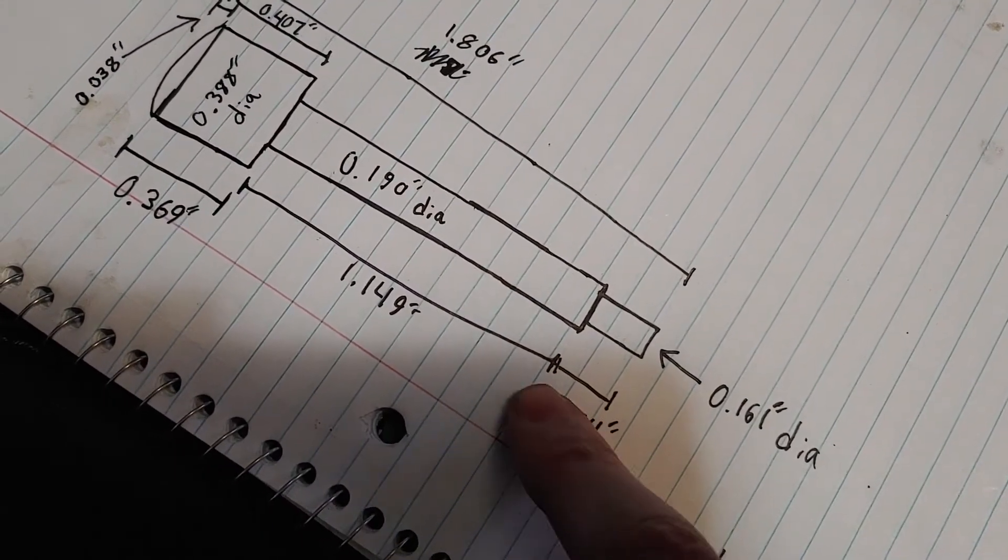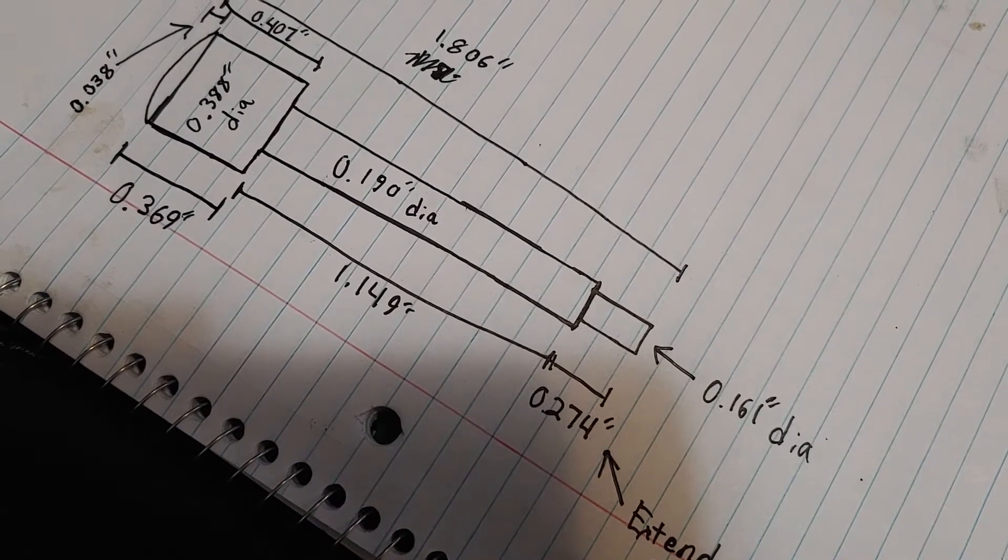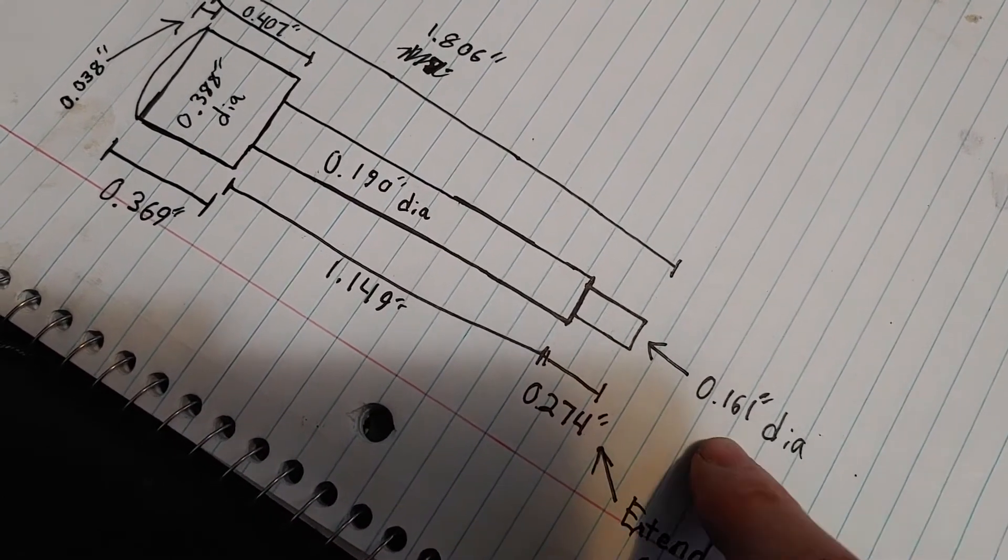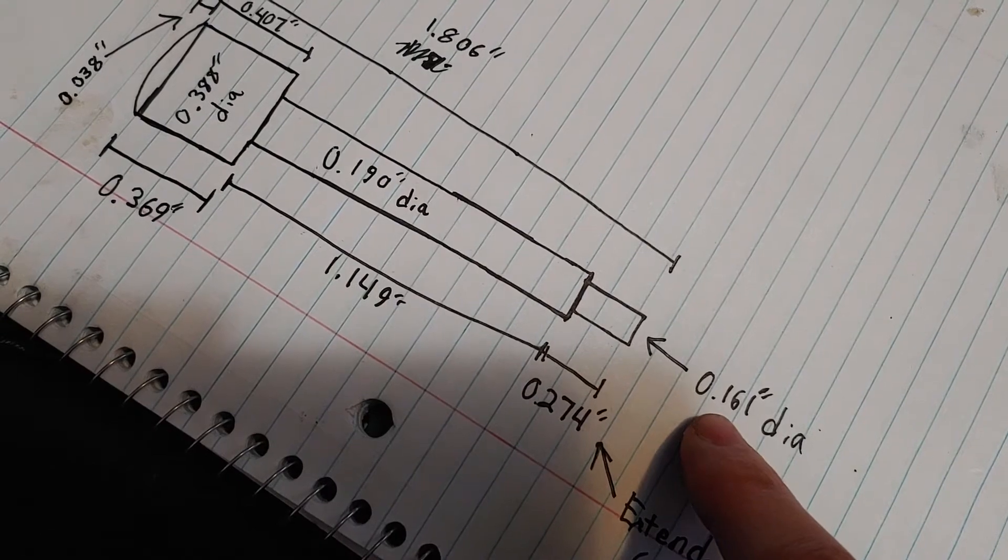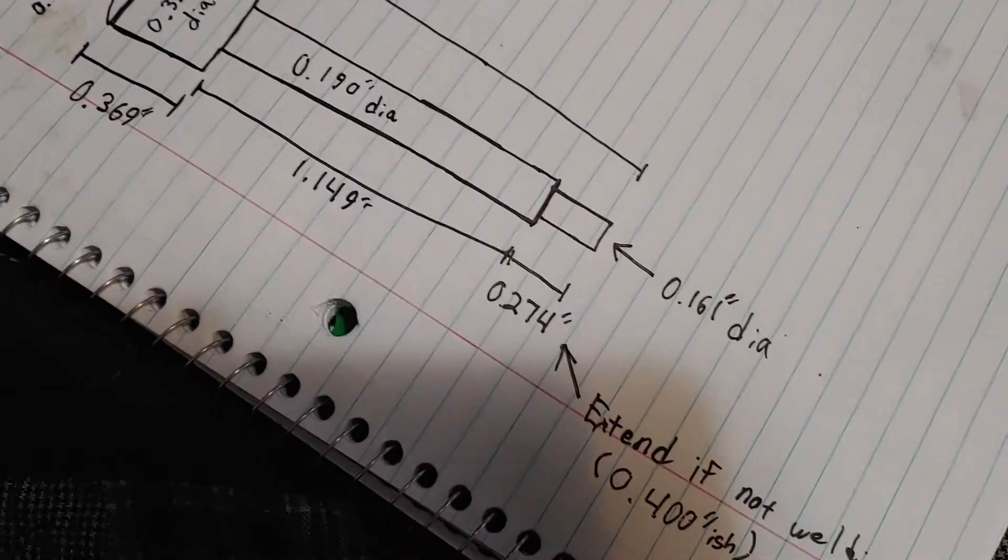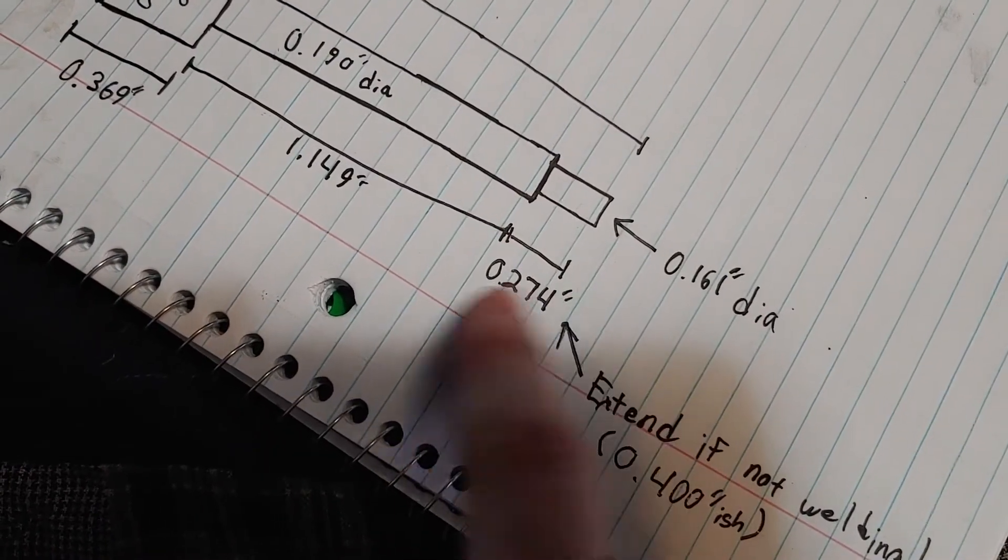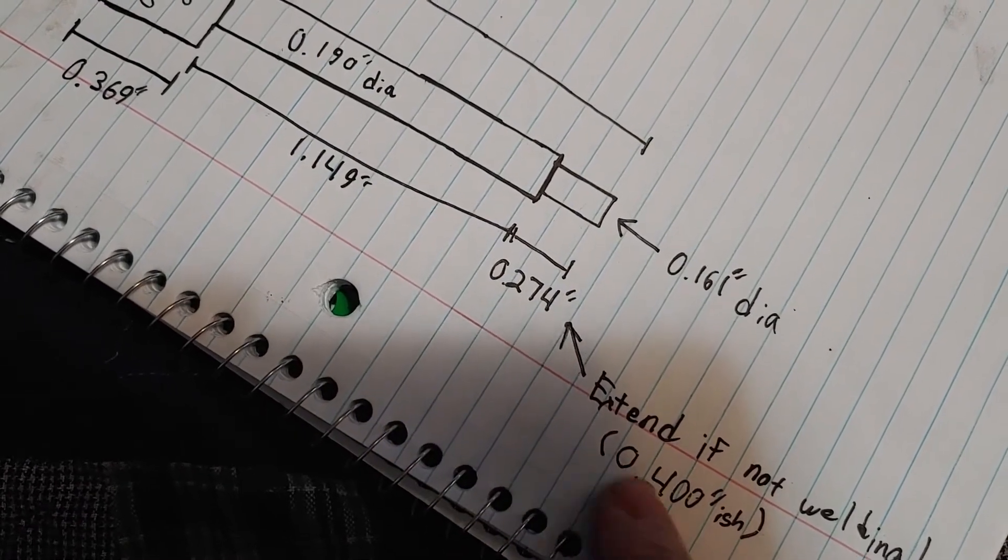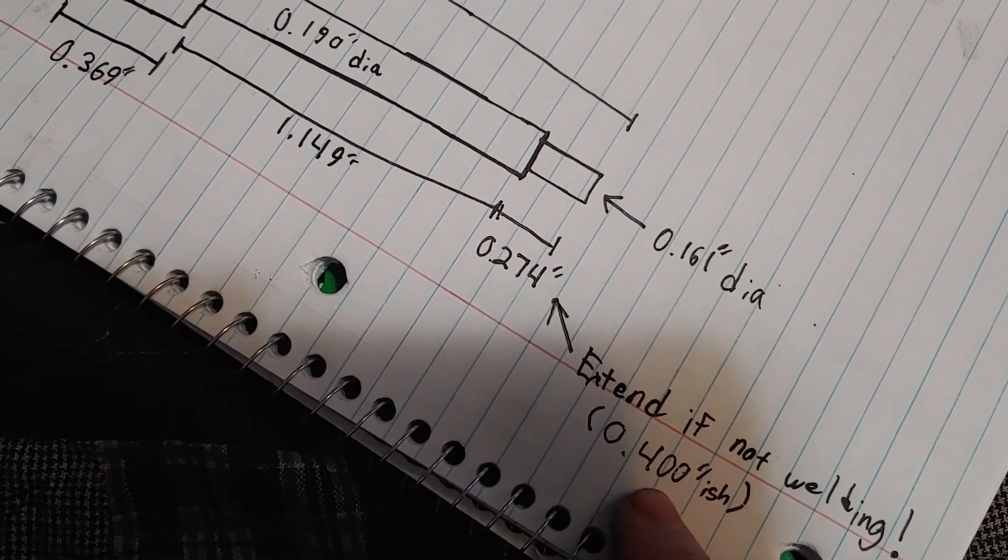The section, this little nub on the pin, is 0.274 inches. The diameter is 0.161 inches. If you are not welding, extend this .274 out to 0.400.